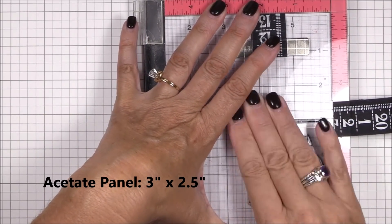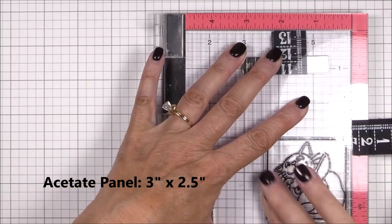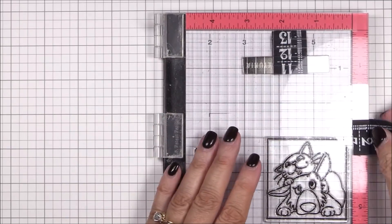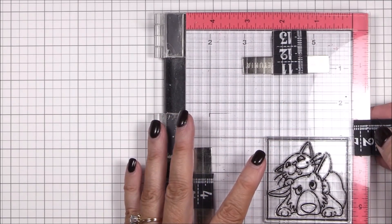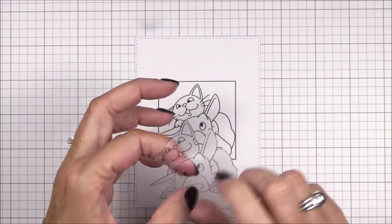Next I've trimmed a three inch by two and a half inch piece of acetate that I've placed inside my MISTI and I'm stamping the same image onto the acetate using Jet Black Stazon solvent ink. This ink is great for stamping permanently onto slick surfaces.